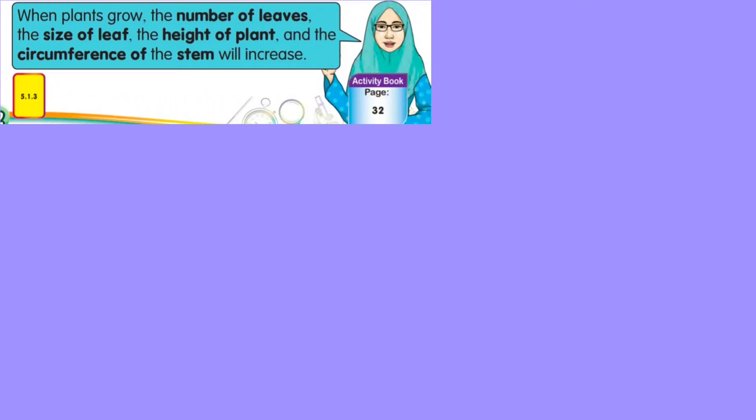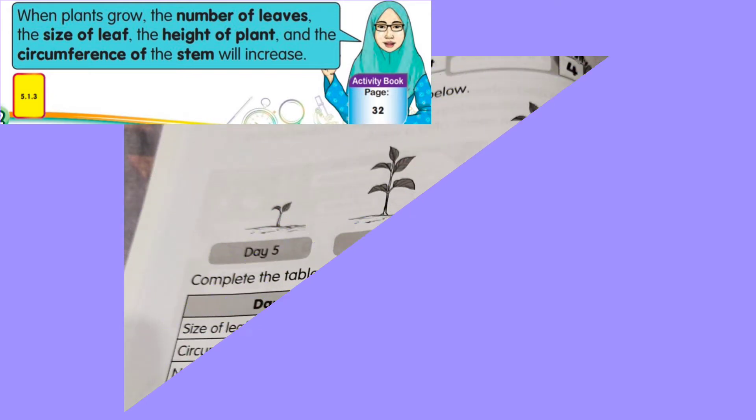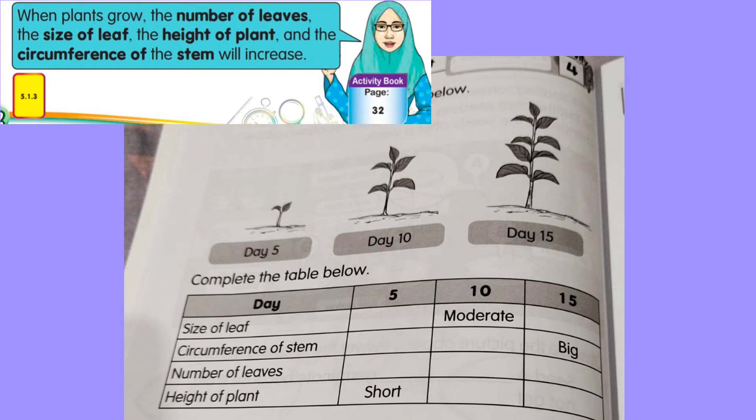So what we have learned today about the growth of plants: when plants grow, the number of leaves, the size of the leaves, the height of the plant, and the circumference of the stem will all increase.